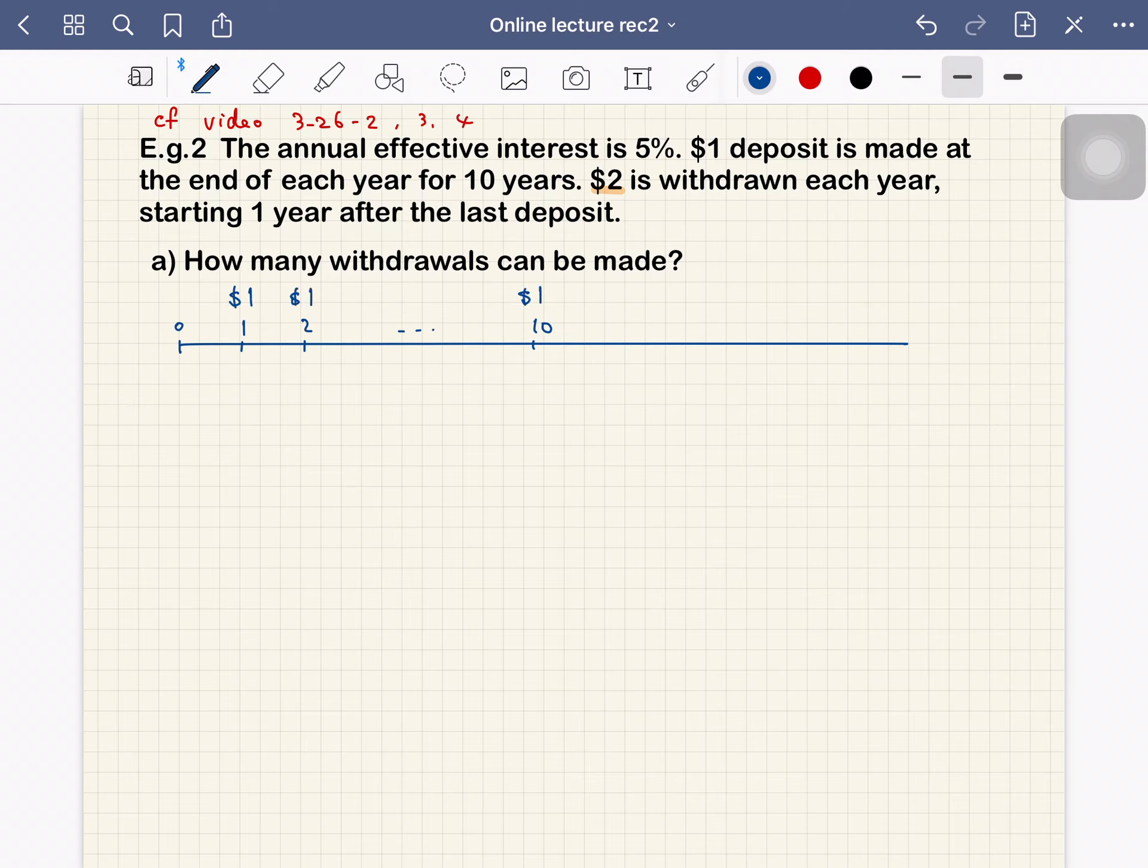Above this timeline, after that we start to receive $2 each. So $2, $2, and at last we have some remaining balance, so $2 plus alpha I would say. The interest rate is 5%, and we want to determine n.